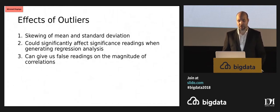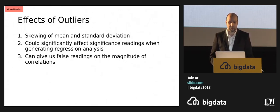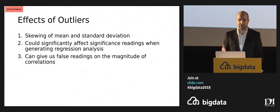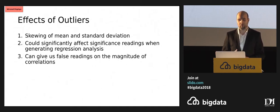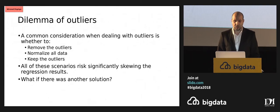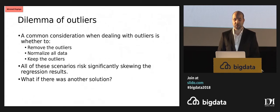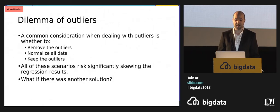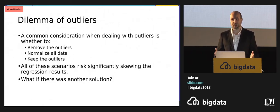The three main things to bear in mind about outliers: they can skew our mean and standard deviation; they can affect our significance readings when we generate regression analysis, increasing the possibility of a type one or type two error — in other words, rejecting a true null hypothesis or accepting a false null hypothesis. The usual courses of action are removing the outliers, normalising the data, or keeping the outliers, and none of these are ideal because they risk skewing the regression results.